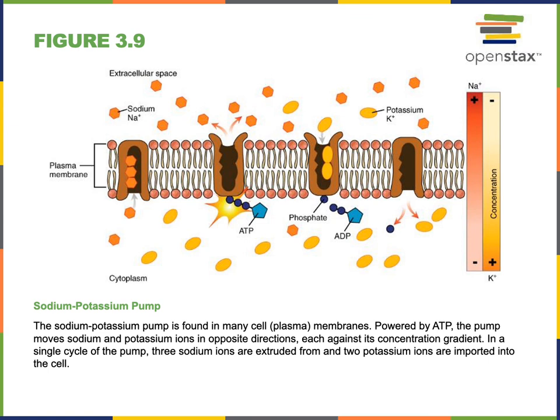Primary active transport is another example of how a cell uses ATP. The sodium-potassium pump forces sodium out of the cell to create a high concentration of sodium in the extracellular space and forces potassium into the cell to create a high concentration of potassium in the cytoplasm. ATP provides the energy to fuel this primary active transport mechanism. The sodium-potassium pump catalyzes hydrolysis of ATP to produce inorganic phosphate and ADP, and the energy released by that exergonic reaction fuels the non-spontaneous movement of sodium and potassium against their concentration gradients.